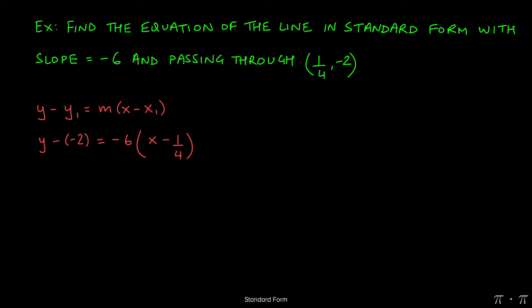So first, a negative times a negative yields a positive on the left-hand side. And on the right-hand side, we can distribute the negative 6. So negative 6 times x will give us negative 6x. Negative 6 times negative 1/4 will make it a positive, and then 6 times 1/4 I just left here.